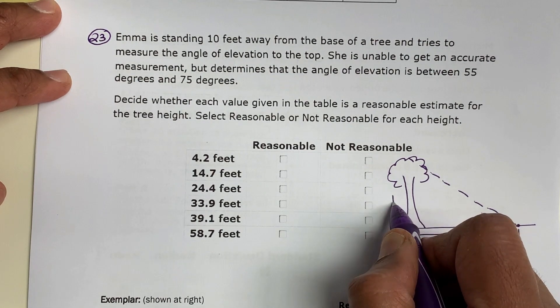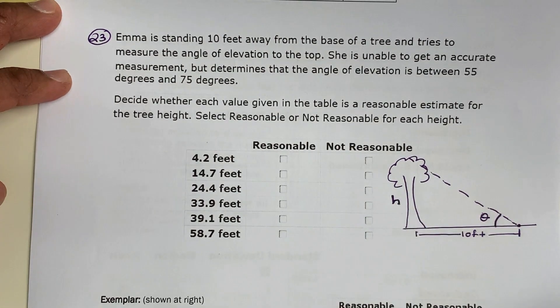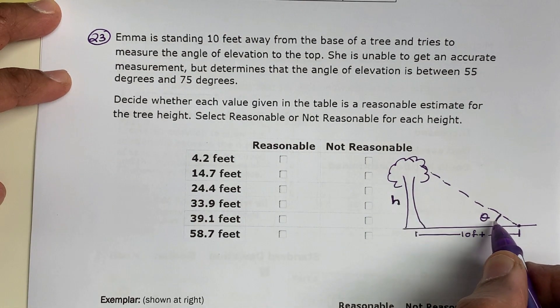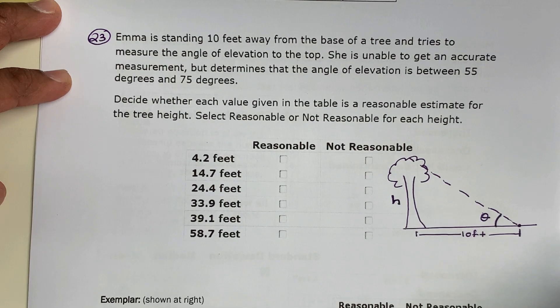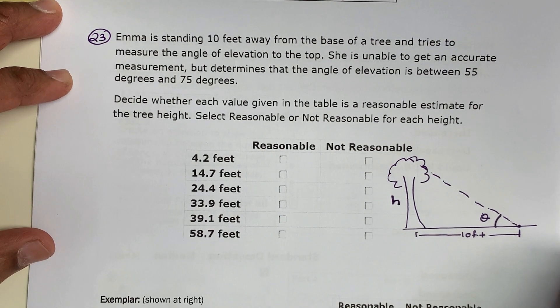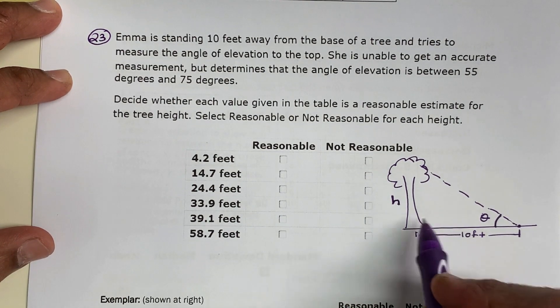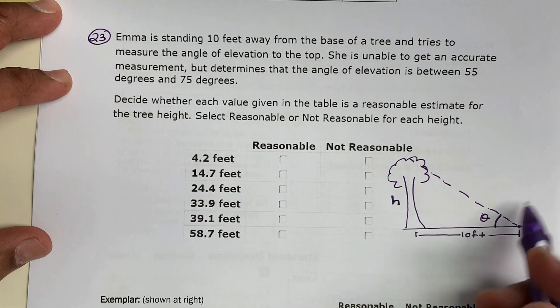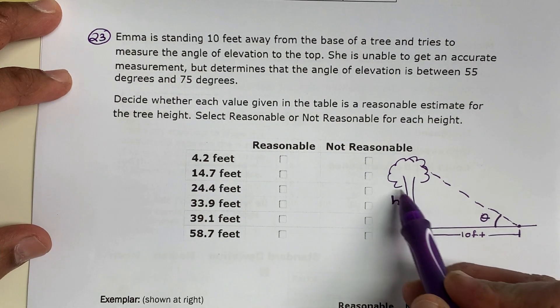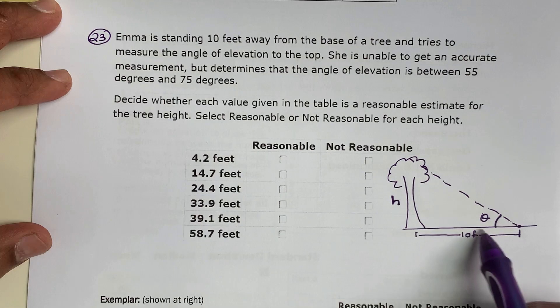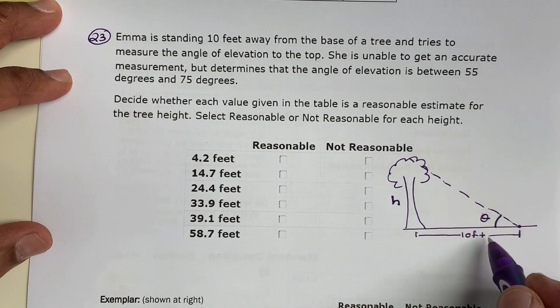We're looking for this opposite side, the height of the tree. So it's opposite of that angle. What I'm thinking of is using a trig function. In this case, I'm going to use tangent because the unknown side is the opposite.